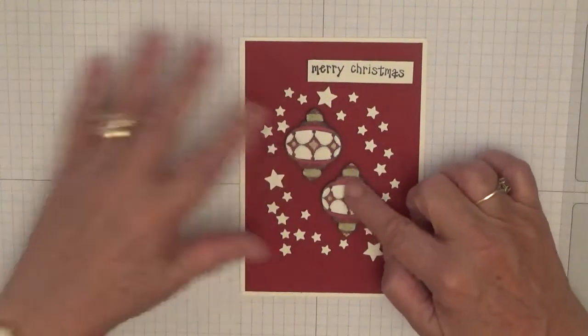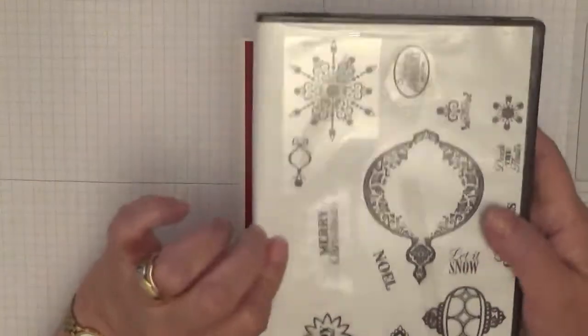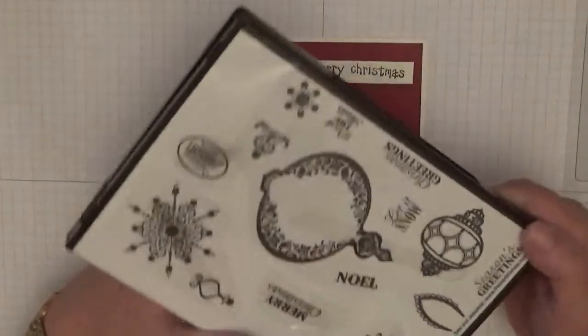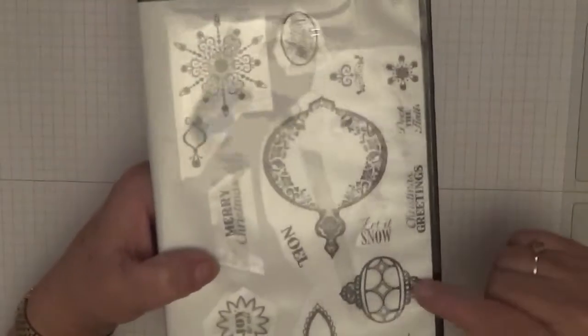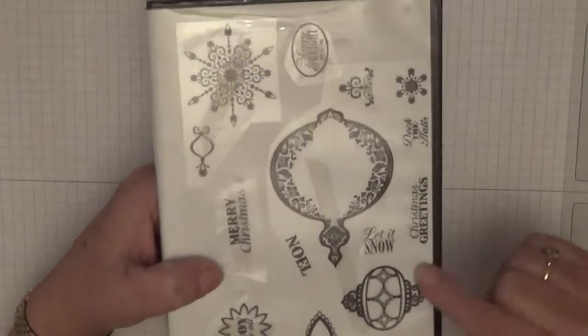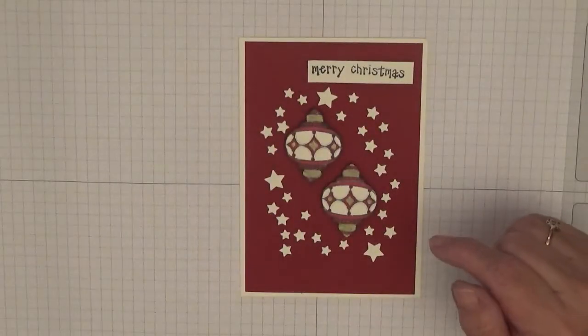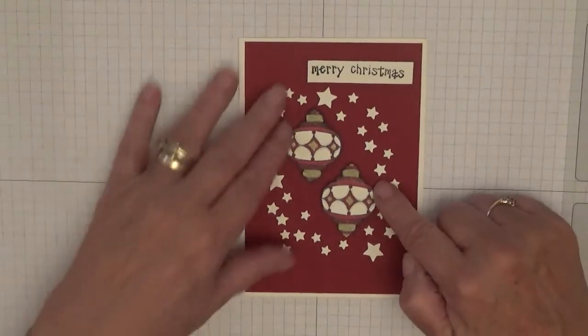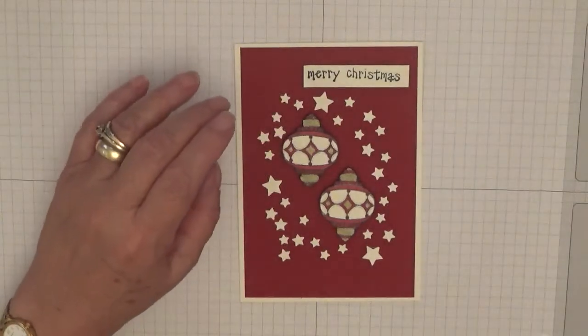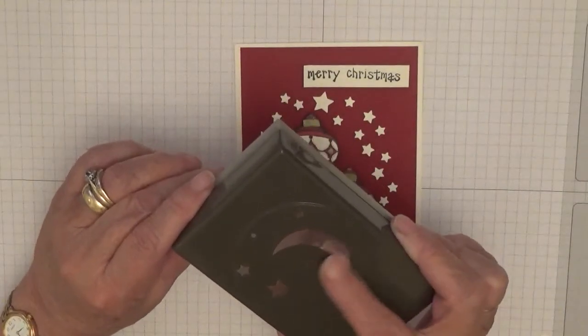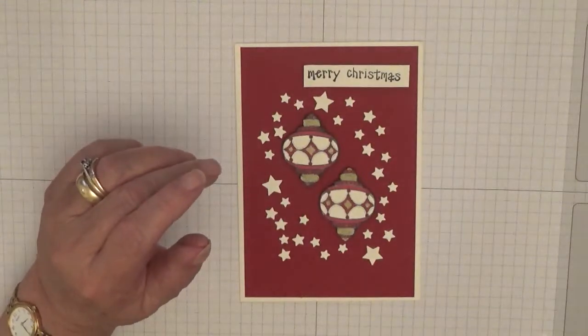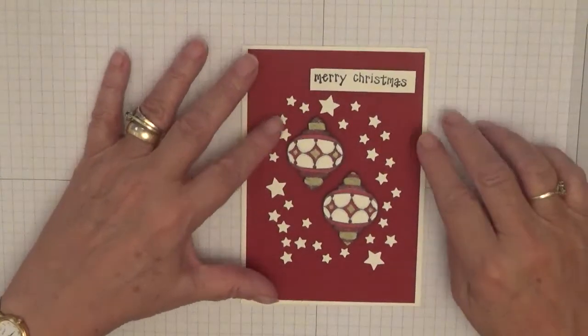I went through my stash and I found some baubles, a bit bigger. I think this came in a magazine when I first started doing cards. The stars come from the Twinkle Twinkle punch, I think that's what it's called.